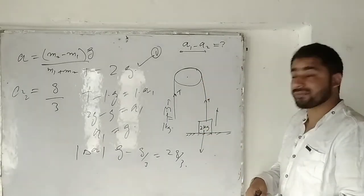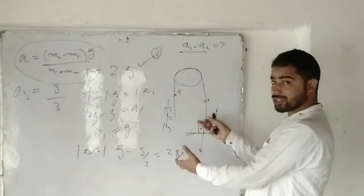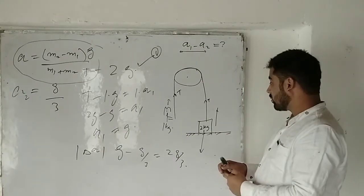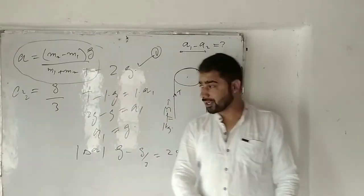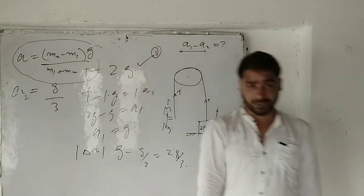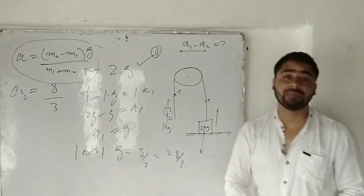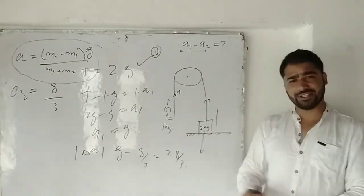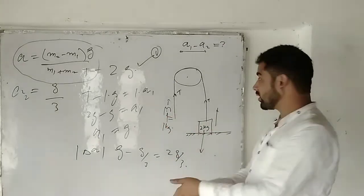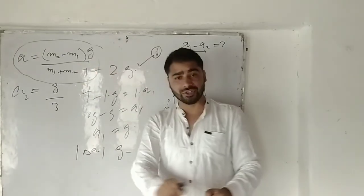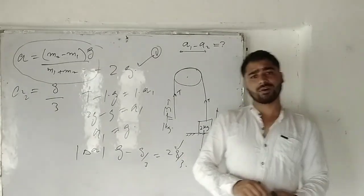Once the cat's acceleration with respect to the string becomes zero, the 2 kg block lifts up and loses contact with the surface. Using the Atwood machine relation, the system's acceleration becomes g/3. Therefore, the change in acceleration of the system is 2g/3. This problem is essentially an Atwood machine variant, and that concludes the solution.